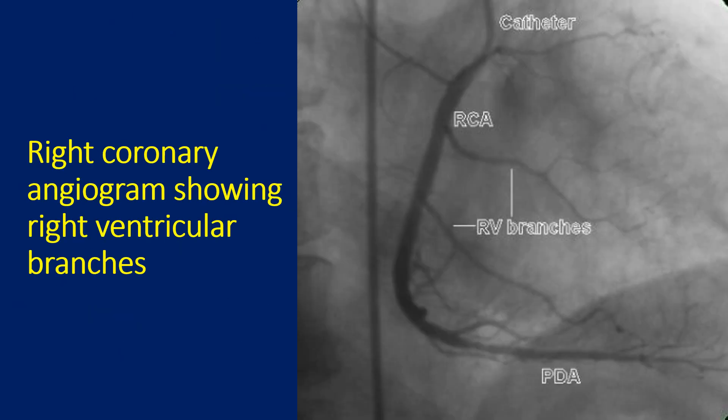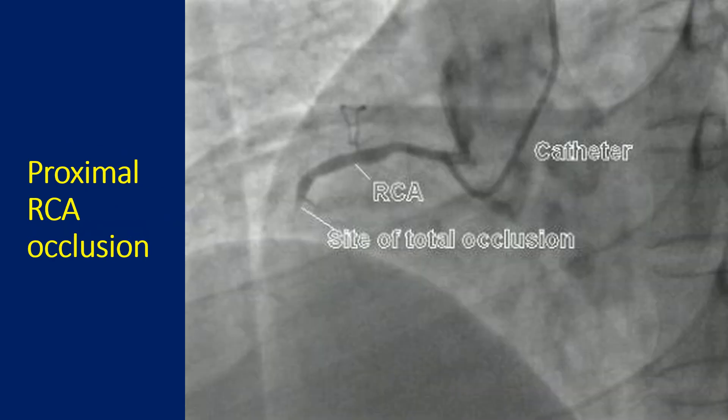Here is a right coronary angiogram showing right ventricular branches. A relatively proximal total occlusion of the right coronary artery is shown here. Hardly any RV branches are seen. A small branch is seen just proximal to the occlusion and another more proximally.